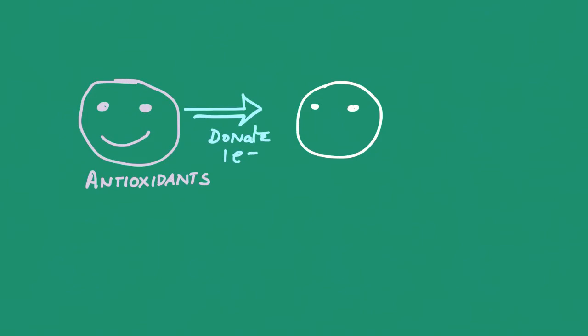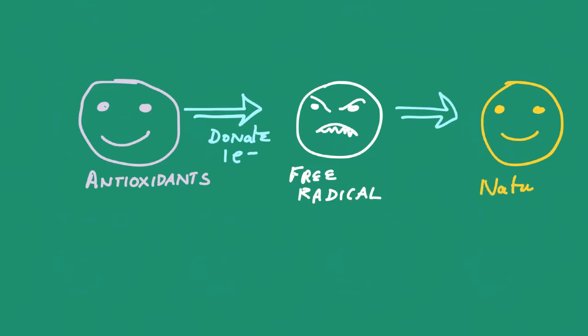So, how do we counter the effect of a free radical? Coming to the rescue are antioxidants. You may have heard the word antioxidants. They are good for you. They are found in green vegetables and vitamins. They donate an electron to a free radical when they come in contact with them. When an electron is now donated from an antioxidant, that electron is no longer unpaired, and so the free radical can now return to its natural state.